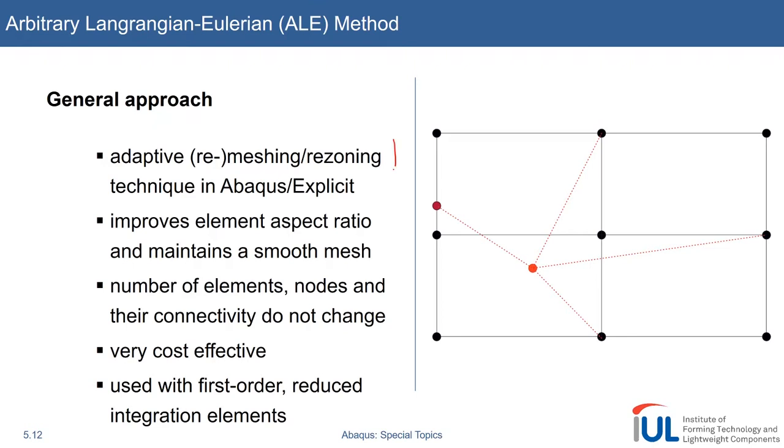People think it's remeshing. Remeshing sounds awesome. Remeshing is a technique that will delete your mesh, keep your geometrical boundaries, and do an online remeshing while the simulation is running. So if you encounter severely high mesh distortion, the simulation will stop, create a new mesh inside the body, and then keep on going with the simulation. This is what ALE is not doing.